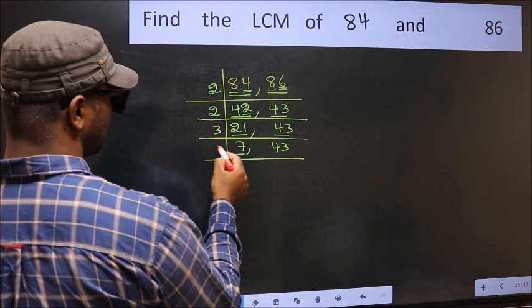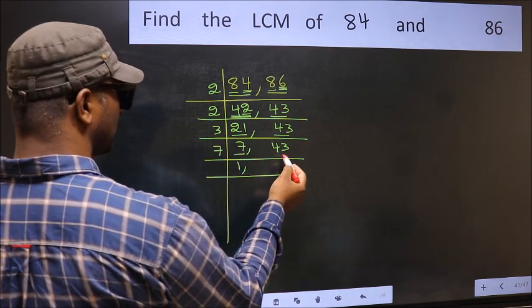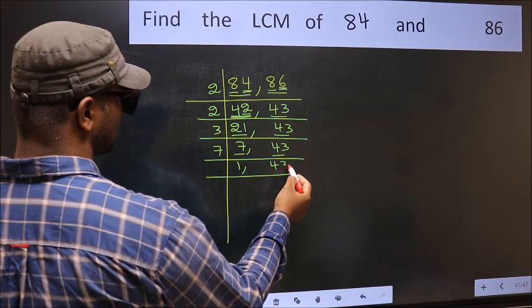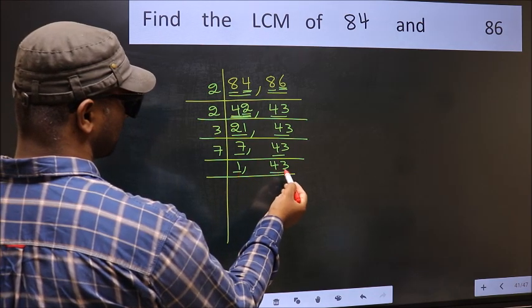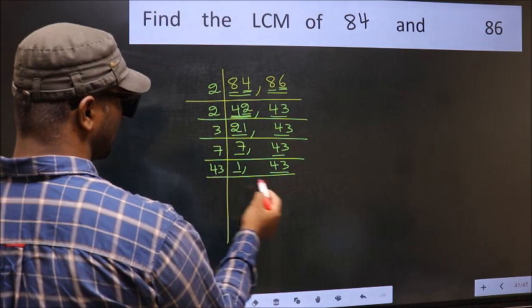Now here we have 7. 7 is a prime number, so 7 times 1 is 7. The other number 43, not divisible by 7, so you write it down as it is. Now we got 1 here. So focus on the next number 43. 43 is a prime number, so 43 times 1 is 43.